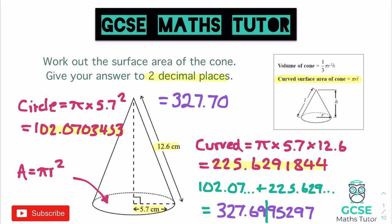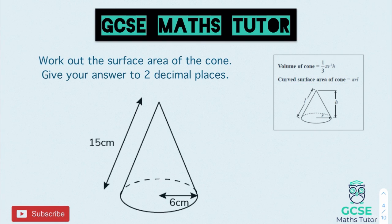It says surface area, so we are working with centimetres squared. My final answer is 327.70 centimetres squared. There are quite a lot of steps - you've got to work out the curved surface area, the circle on the bottom, add it all together, and make sure you round correctly. That's how we work out the surface area of a cone. So let's have a look at a question for you to have a go at - pause the video there and have a go at working out the surface area of this cone.